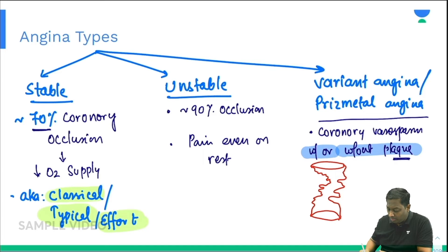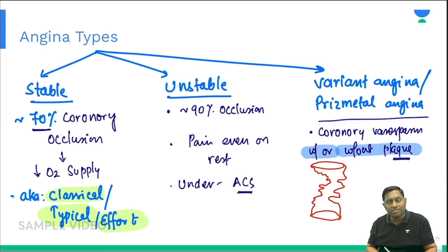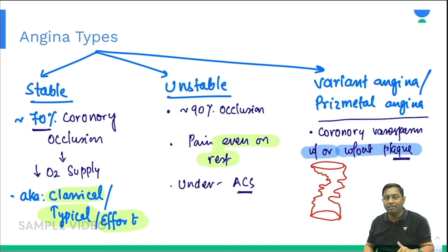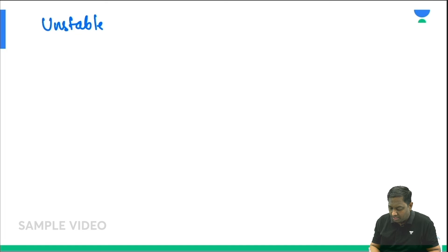Unstable angina comes under the umbrella of acute coronary syndrome. The plaque is unstable and the patient is also unstable — the patient will still have pain even while resting at home. Neither the plaque is stable nor the patient is stable. In unstable angina, there is around 90% or sometimes more than 90% occlusion of the coronary.